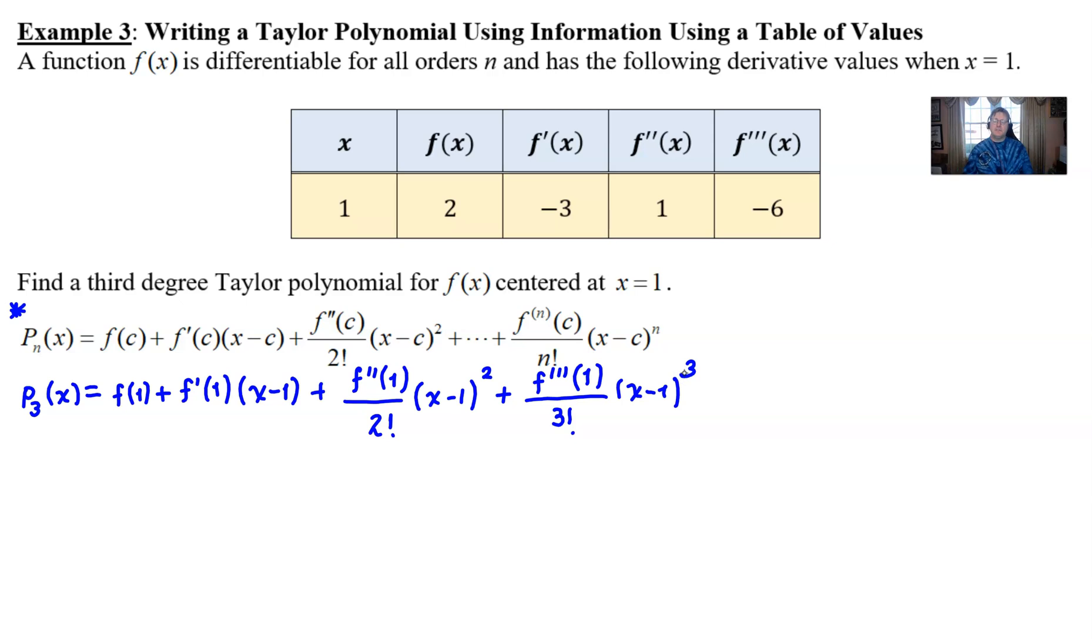And all we have to do is fill the values in from the table. They're all there in front of us. Two is f of one, f prime of one is negative three. So I'll just plop a minus three with my quantity there.